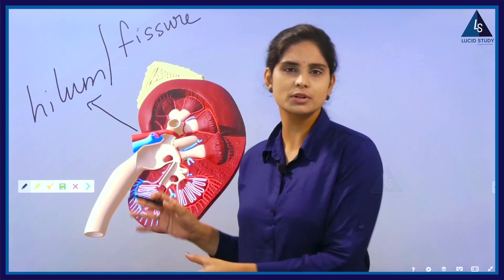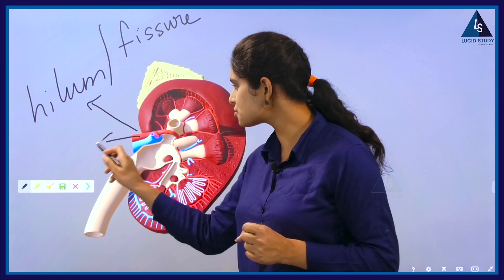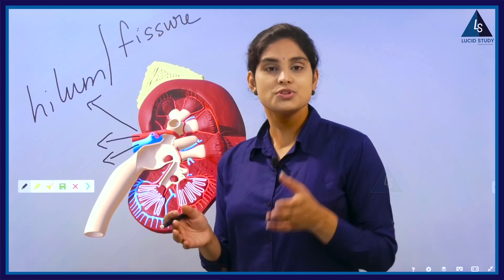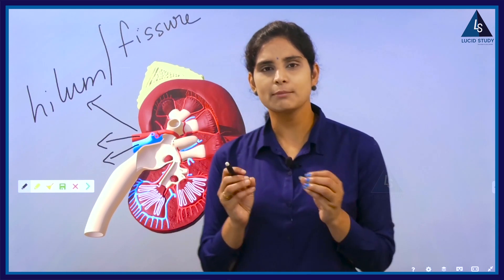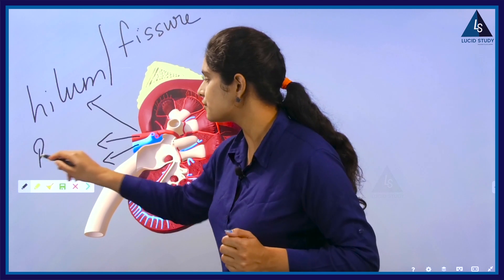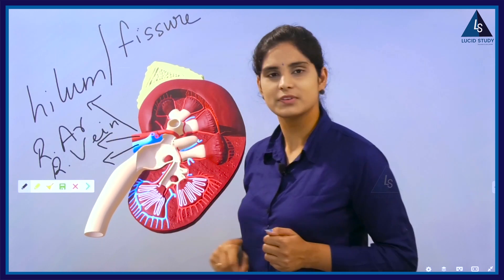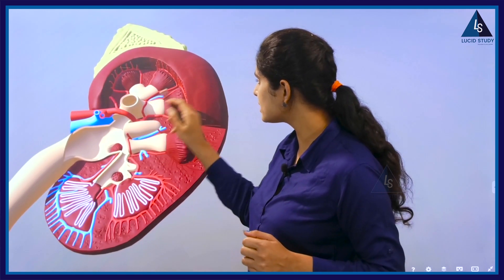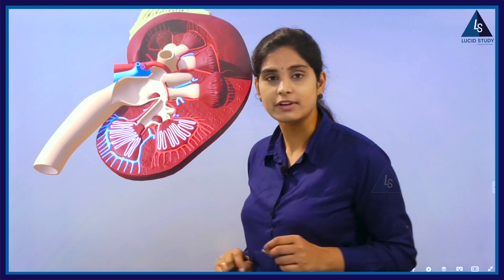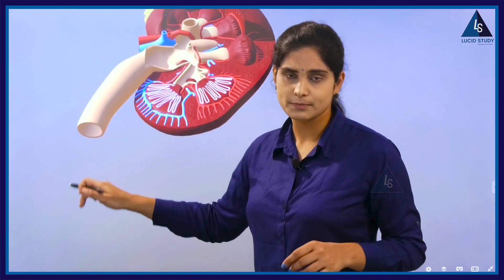What are the things that are entering and getting out of the hilum? You can see here two structures — the red color structure and blue color structures. These two structures are renal blood vessels. The red color structures are called renal arteries and the blue color structures are called renal vein. And you can see a white color structure coming out of this kidney — this structure is called ureter.